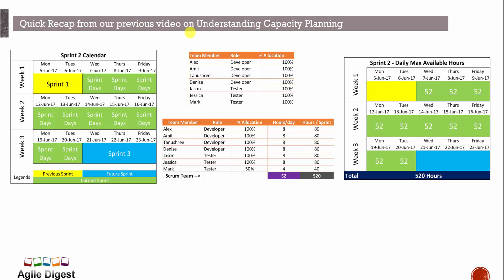Assume we have 10 days of sprint starting on 7th of June and ending on 20th of June. Every day we are doing our daily standup, and before starting this sprint we are doing a sprint planning. We have seven team members: four developers — Alex, Amit, Tanushri, Denis — and three testers — Jason, Jessica, Mark. Allocation is 100% for all except Mark, who has 50% allocation. Default working hours is eight hours for everyone and four hours for Mark.